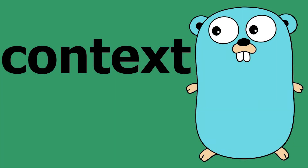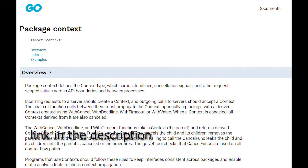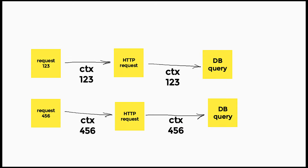Today we're doing a deep dive of the context package in Go. This package allows you to build and manipulate a context, which is just a scope holder. As a quick example, imagine an application where you send a request that performs an HTTP communication and then subsequently does a DB operation. With context, you can pass a specific context for that request, and the context will be aware of which request it belongs to.